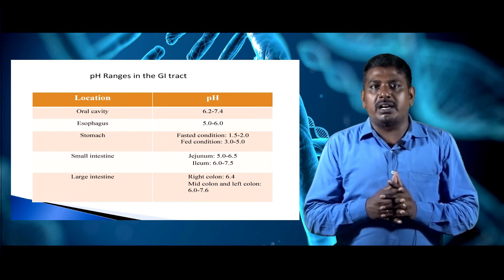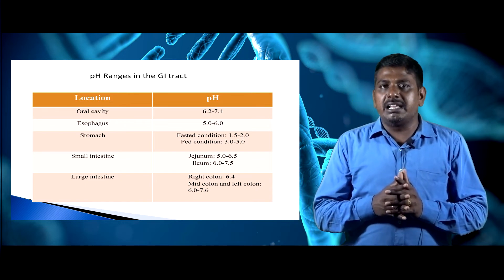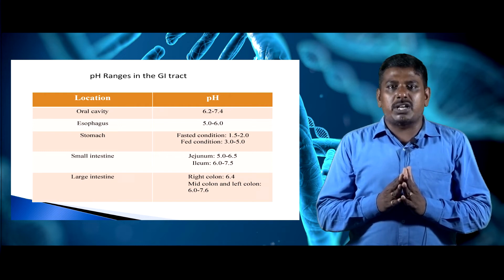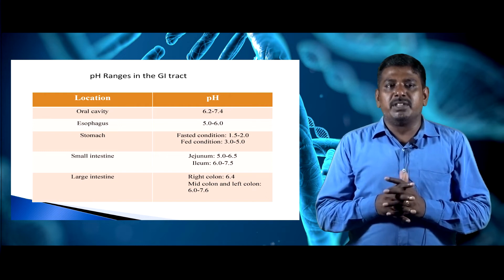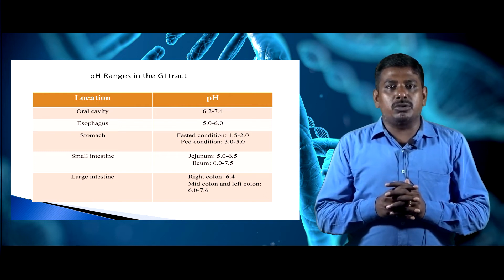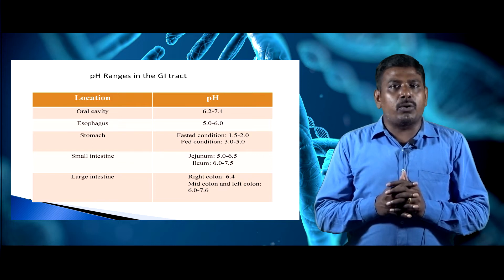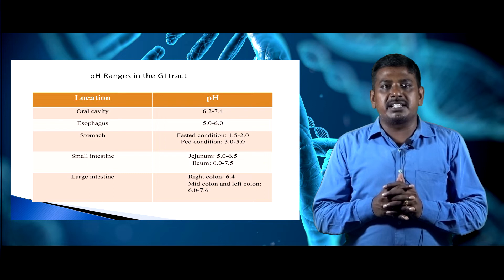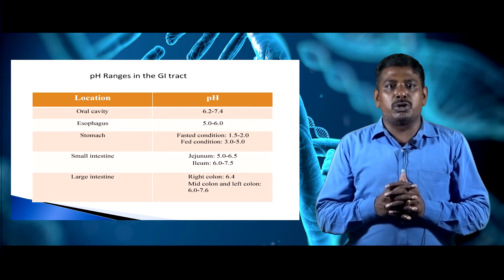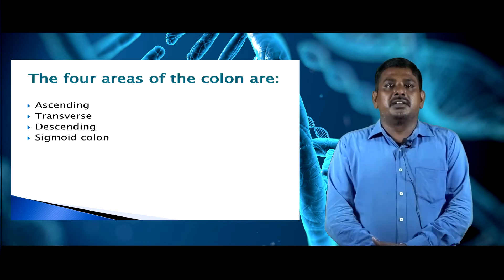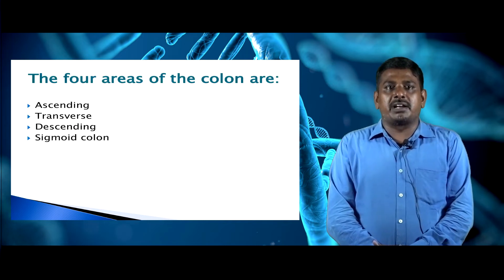The ileum, also called the lower portion of the small intestine, has a pH of 6.0 to 7.5. The large intestine, also called the colon, has a right colon pH of 6.4, and the middle and left colon pH is 6.0 to 7.6.